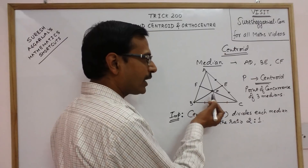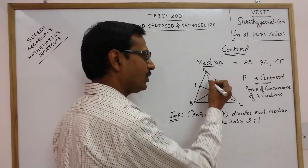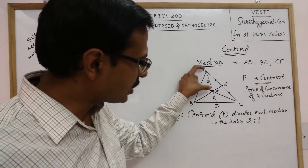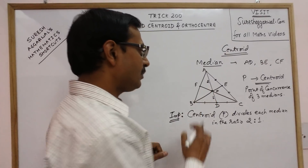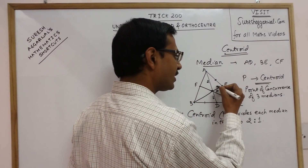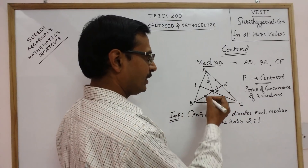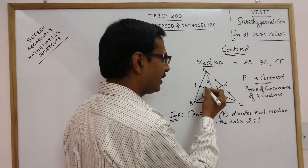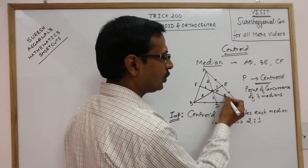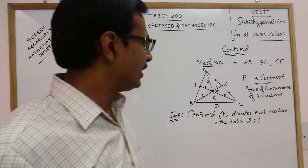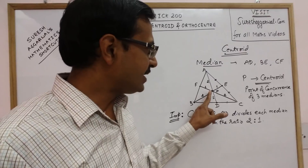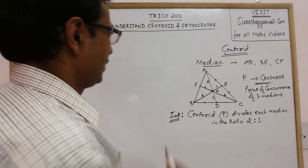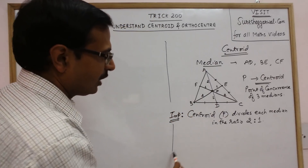The centroid divides each median in the ratio 2:1. If you see, AP is longer and PD is shorter — if PD is 1, then AP is 2, giving a ratio of 2:1. Similarly, BP to PE: if PE is 1, then BP is 2. And if PF is 1, then CP is 2. So all three medians are divided by the centroid in the constant ratio of 2:1.